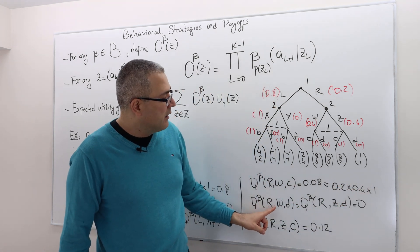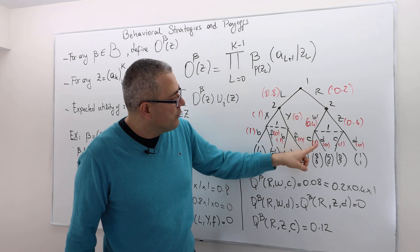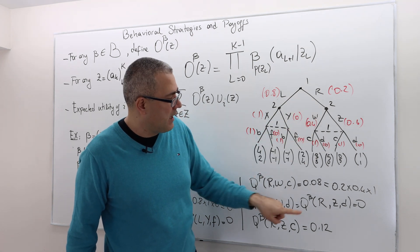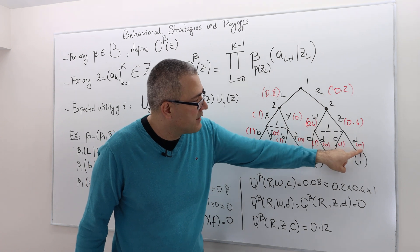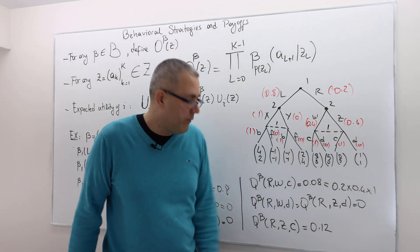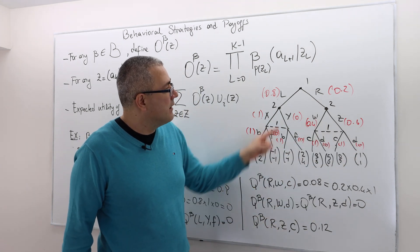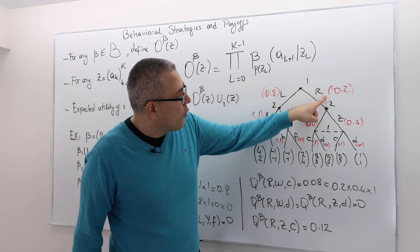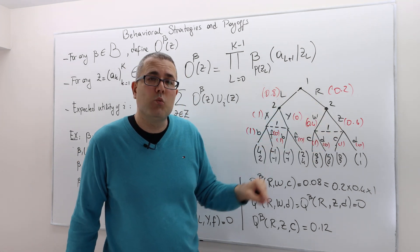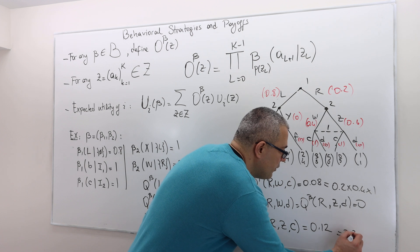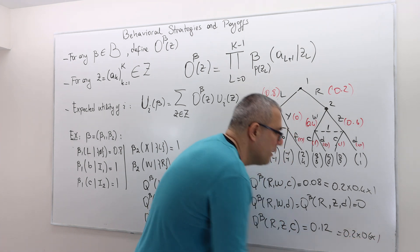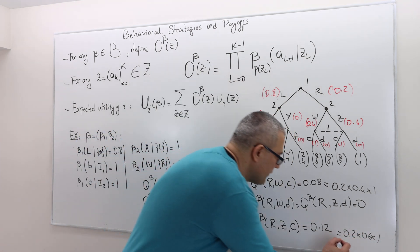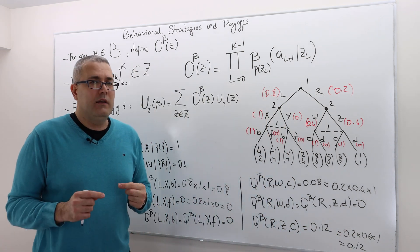What about RWD? It's 0 because of this. Or RZD, again it's 0 because of this. And then finally, RZC: 0.2 times 0.6 times 1, which is 0.12.